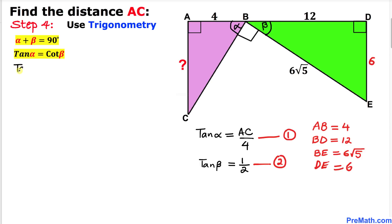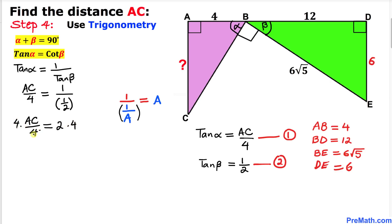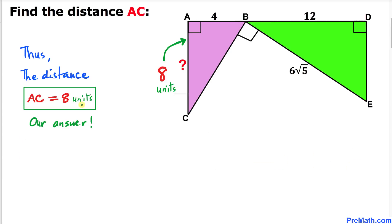From Equation 1, tan(alpha) = AC/4, and from Equation 2, tan(beta) = 6/12 = 1/2. So: AC/4 = 1/(1/2) = 2. Multiplying both sides by 4, AC = 8 units. That is our answer — the distance AC is 8 units. Thanks for watching, and please don't forget to subscribe for more exciting videos!